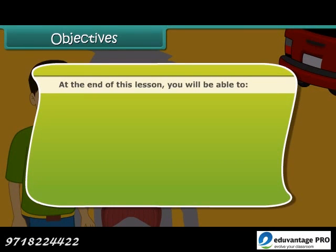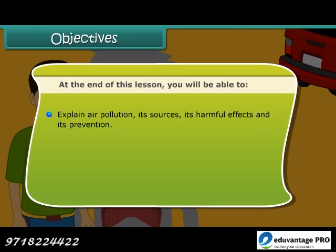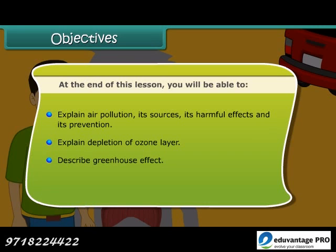At the end of this lesson, you will be able to: explain air pollution, its sources, its harmful effects and its prevention. Explain depletion of the ozone layer. Describe the greenhouse effect. Explain the formation of acid rain.